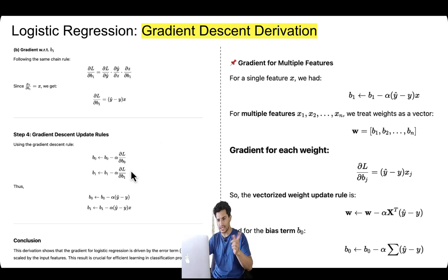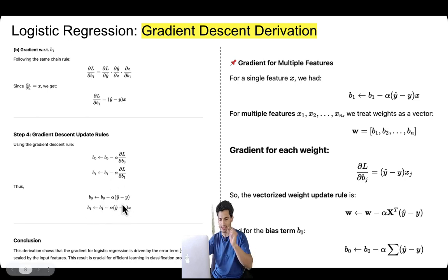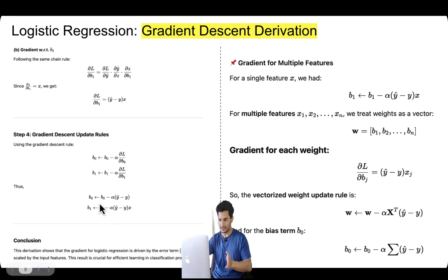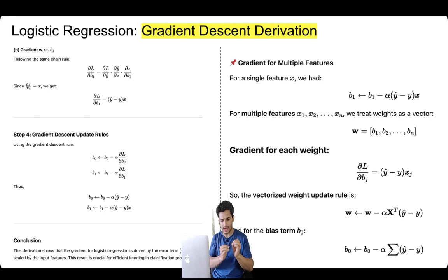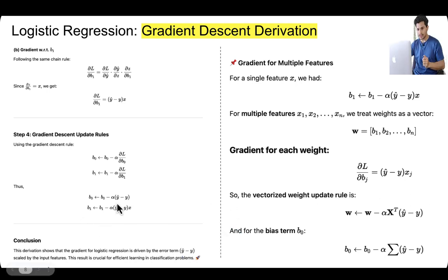Now we know the update rules. We move in the negative direction of the gradient iteratively: b₀ = b₀ - α·(ŷ - y), and b₁ = b₁ - α·(ŷ - y)·x, where α is the learning rate. We continuously take baby steps because the learning rate is very small. After a good number of iterations, or once gradients stop changing much, b₀ and b₁ are considered stable. In interviews, this is what is tested: knowing how to define a loss function, minimize it, and apply numerical solution via partial derivatives moving in the negative direction of the gradient.